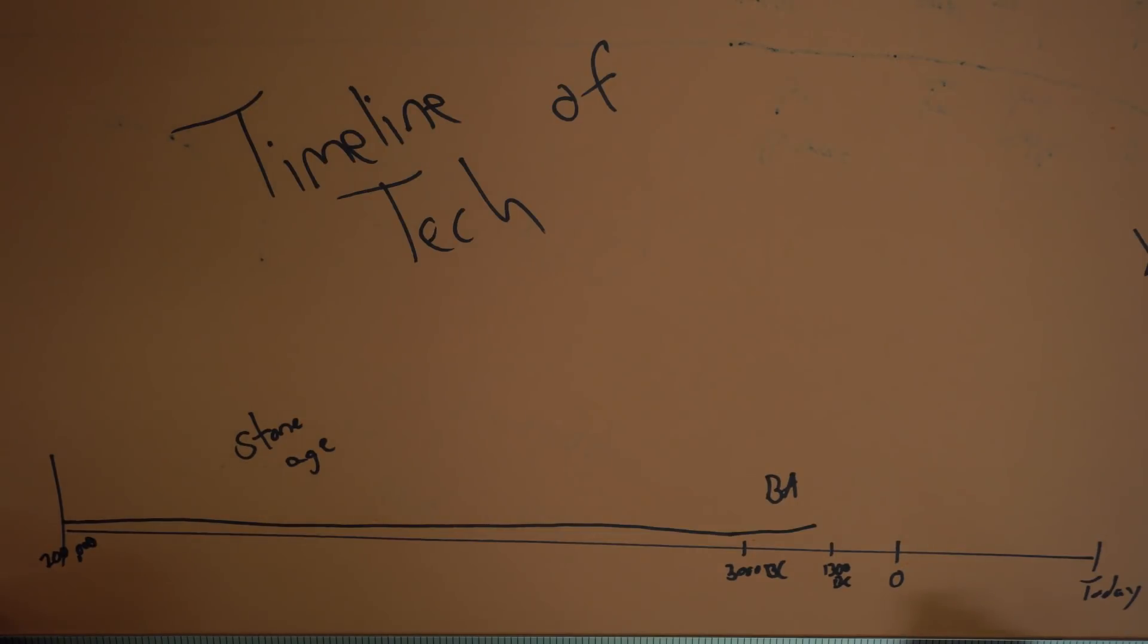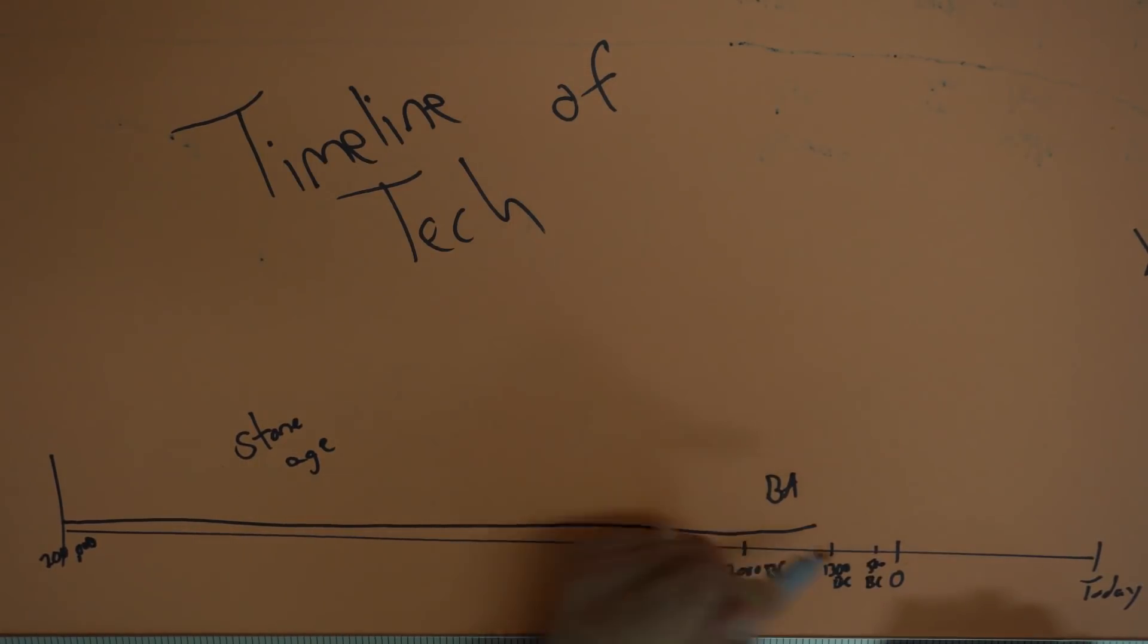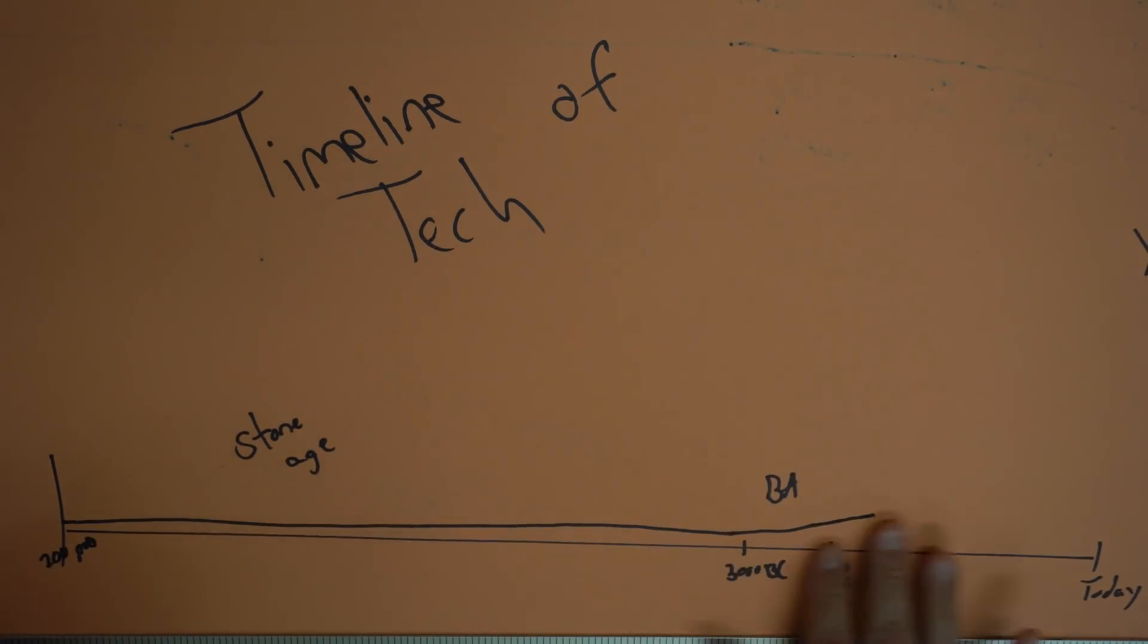From there, we jump into the Iron Age, which goes from about, let's say, it goes to about 500 or so. And we get better tools. We get stronger tools, which again allows to do a little bit more work. But we're not changing this graph a whole bunch. And this is actually a little bit exaggerated. It's a lot flatter than this. But things are able to get done. We're able to start changing some things.